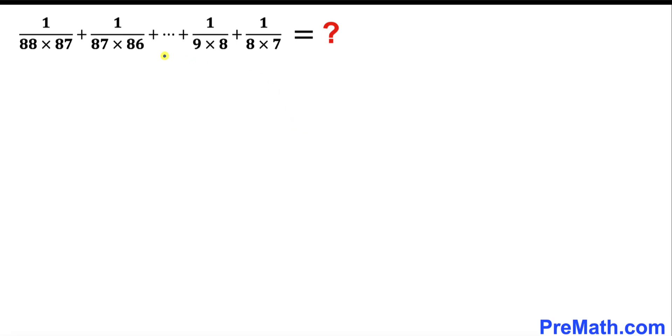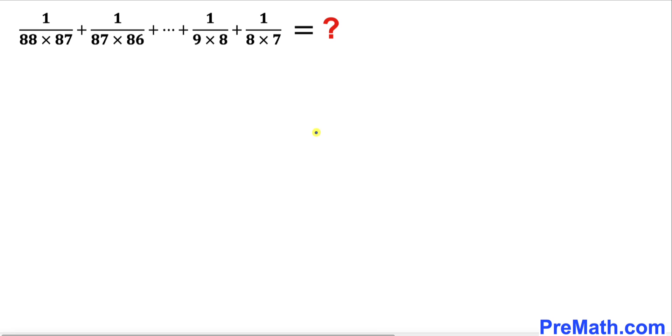Welcome to PreMath. In this video we are going to find the sum of this given series: 1 divided by 88 times 87 plus 1 divided by 87 times 86, all the way to 1 divided by 8 times 7. Please don't forget to give a thumbs up and subscribe.